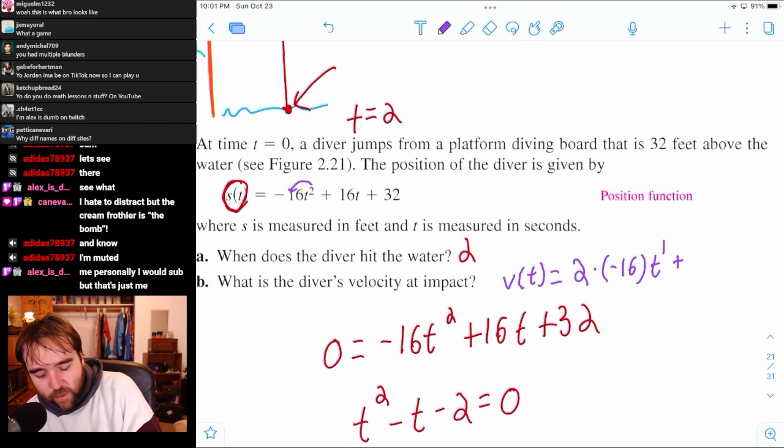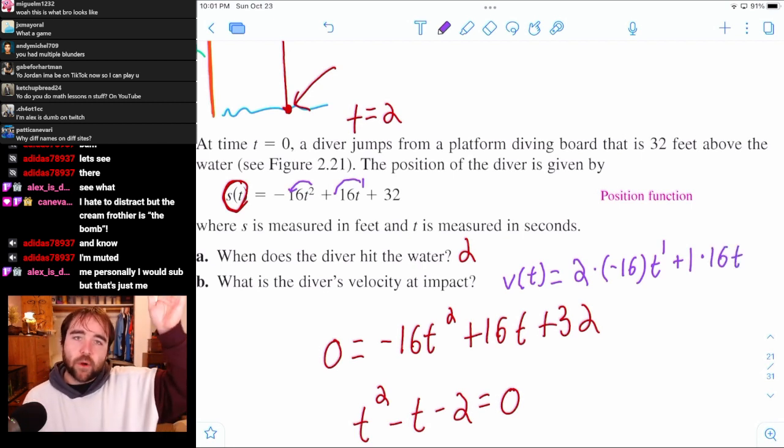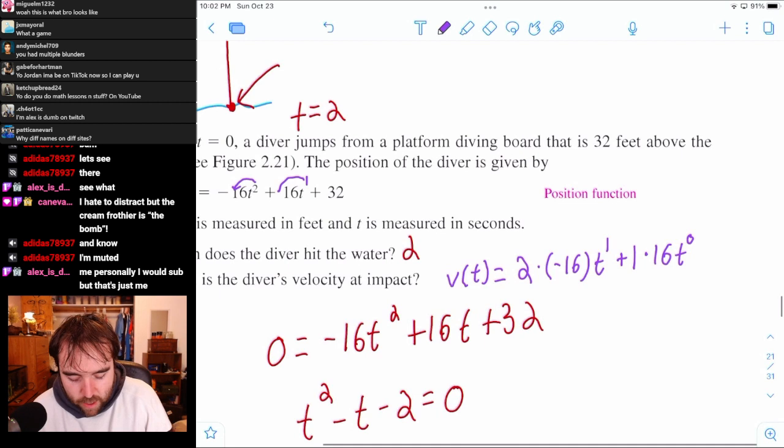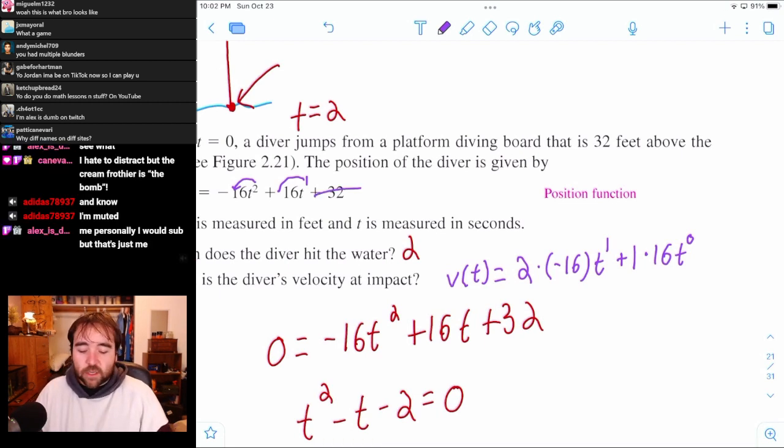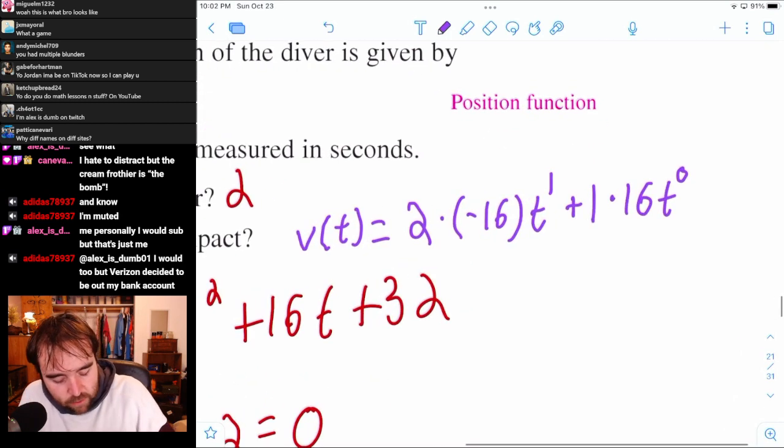Same thing on the next one. So right now the power is 1. You're moving the power to the front. So you're just multiplying by 1. And you're decreasing the power by 1. So the power was 1. We're going to decrease it by 1 to make it 0. And then the 32 actually just goes away. When we take the derivative of a constant, it just goes away.